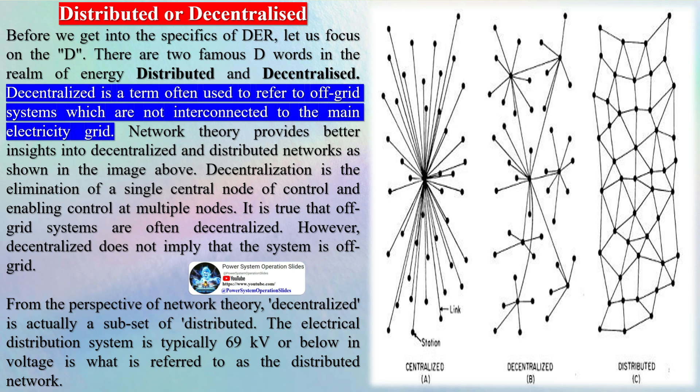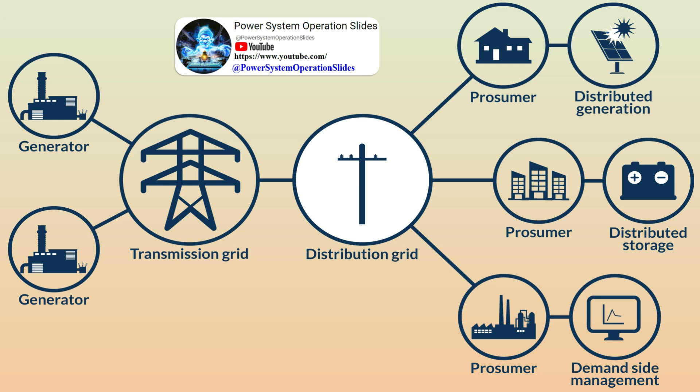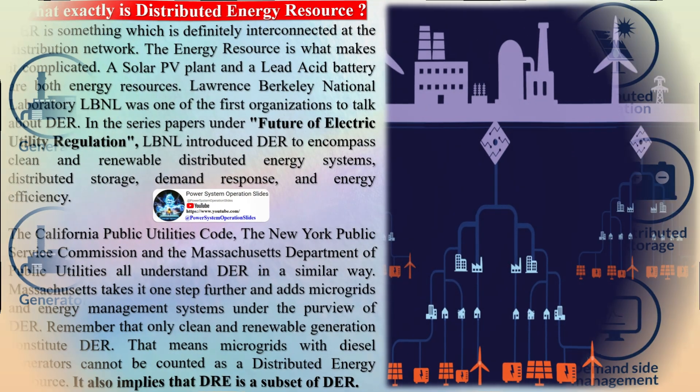The question is: distributed or decentralized? Before we get into the specifics of DER, let us focus on the D. There are two famous D-words in the realm of energy — distributed and decentralized. Decentralized is a term often used to refer to off-grid systems which are not interconnected to the main electricity grid. However, decentralized does not imply that the system is off-grid.